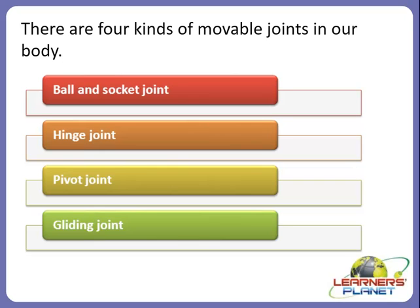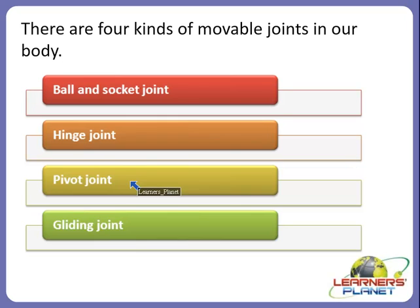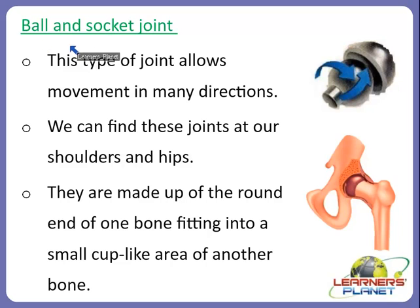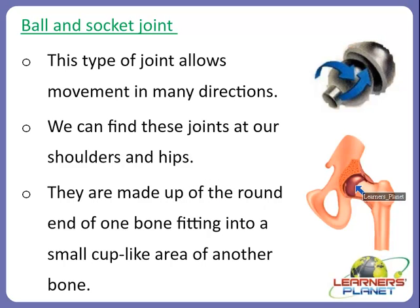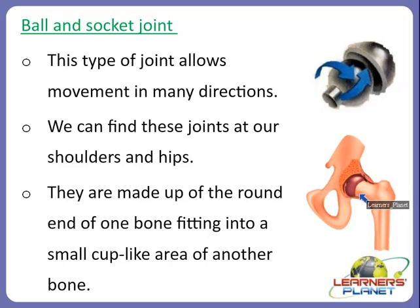Based on how much joints move, there are four kinds of movable joints present in our body. Let us study each joint in detail. We will start with the ball and socket joint. As you can see in this picture, this is a type of joint which allows movement in many directions. We can find these joints at our shoulders and hips — this picture shows a hip joint.